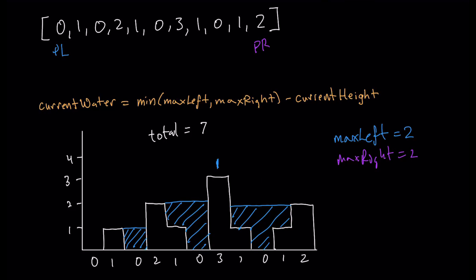Move the right pointer once more. Right value (1) is smaller than left (3). Max right (2) is larger than current value (1), so we calculate water: 2 - 1 = 1. Add to total: 7 + 1 = 8. The two pointers have now bumped up against each other, so we're done. Total water = 8.